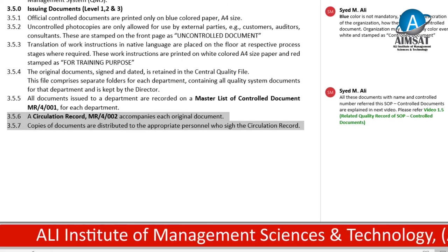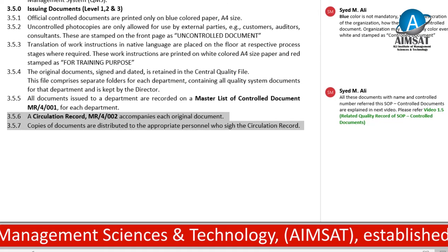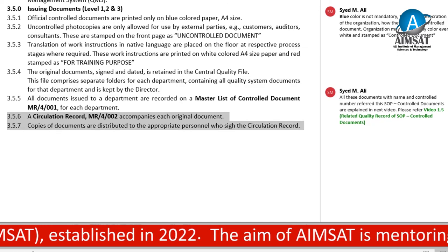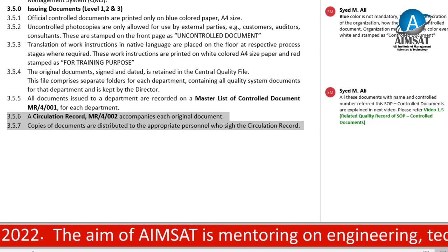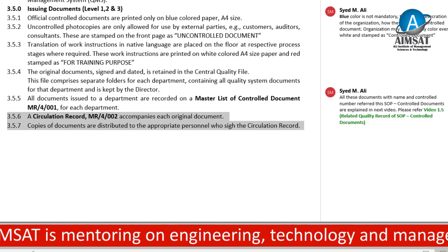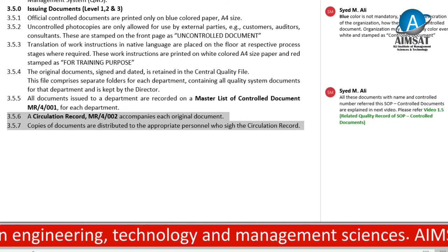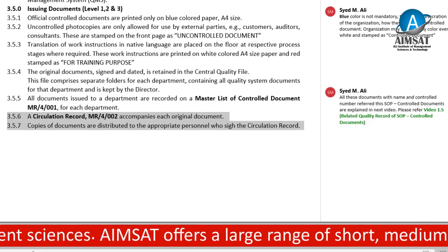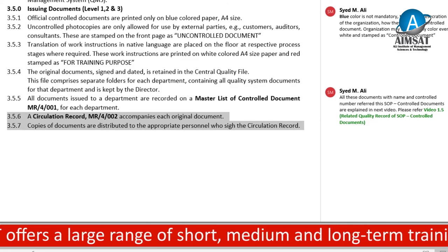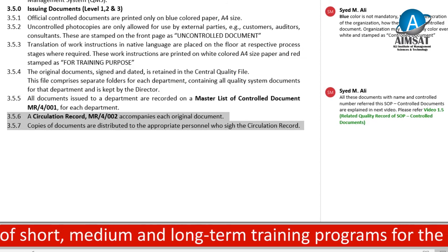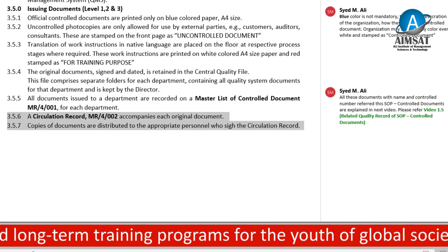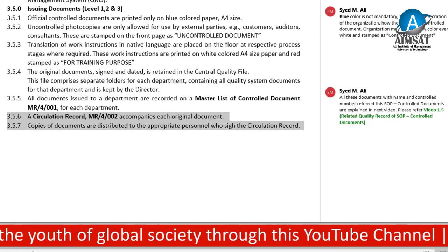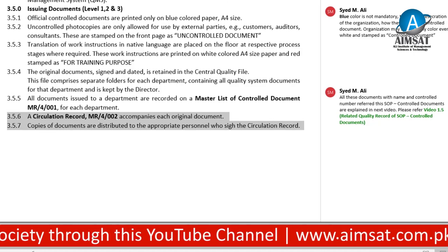The original document after approval will be retained in the central quality file as well as in the MR file. These files comprise separate folders for each department containing all quality system documents, kept by the director. All documents issued to the department are recorded on a master list of control documents MR4-001. A circulation record MR4-002 and copies of documents are distributed to appropriate personnel. This procedure is continued — please refer to lecture number four.